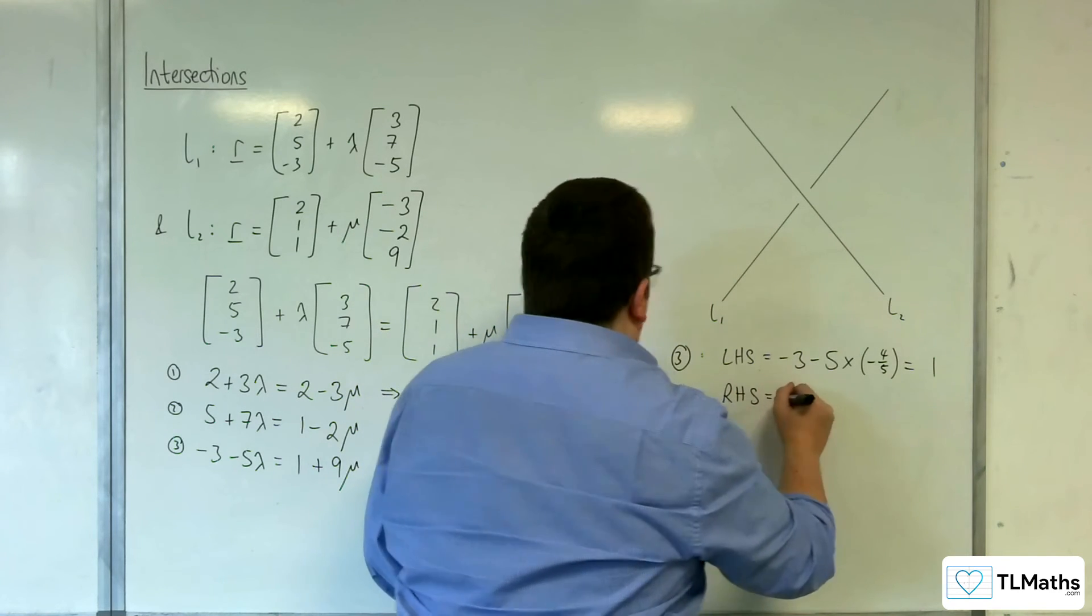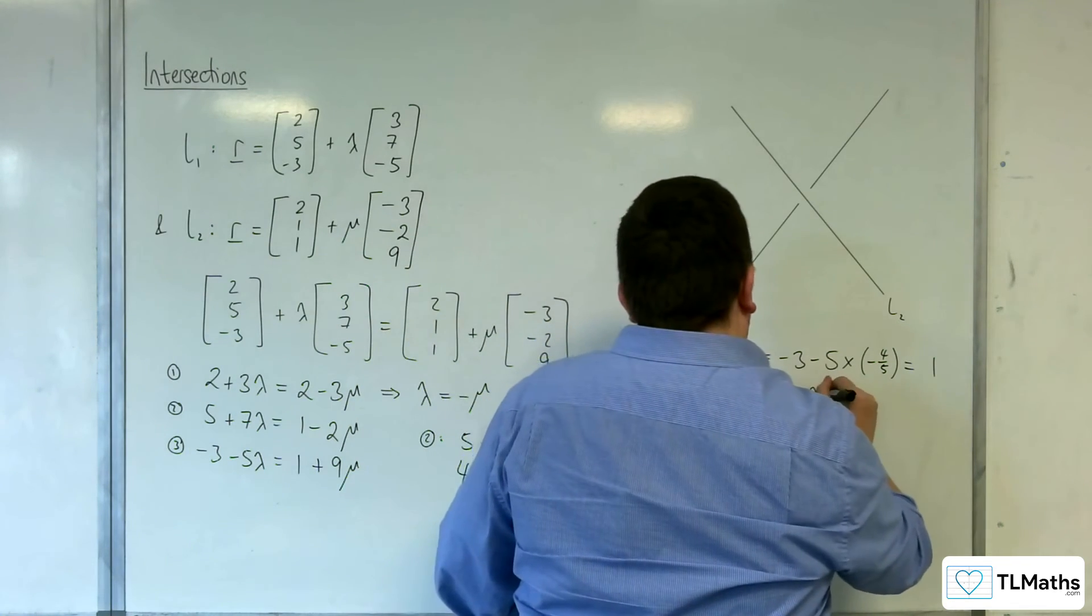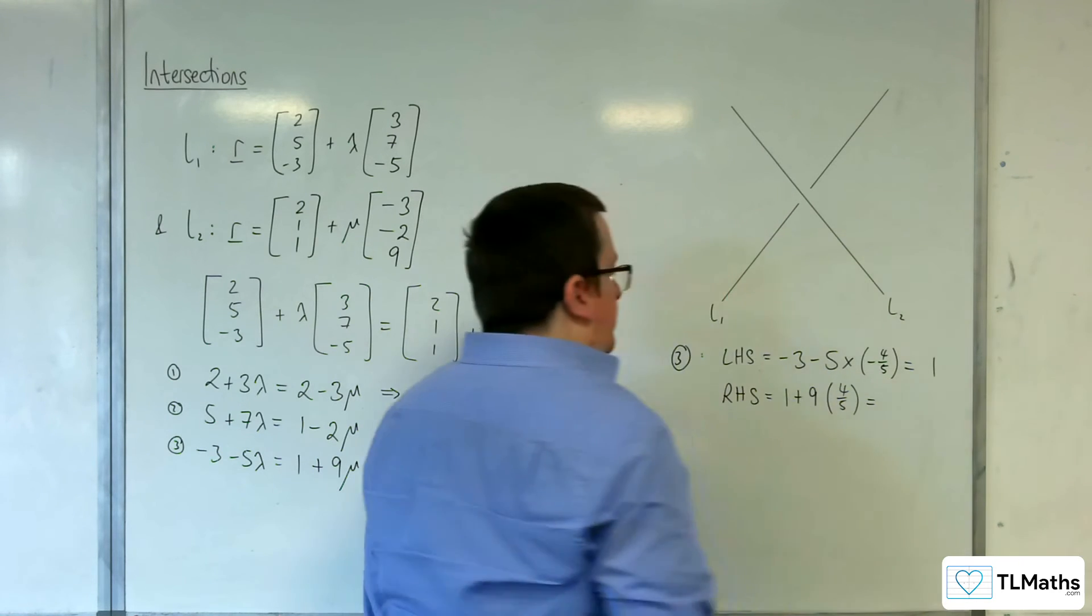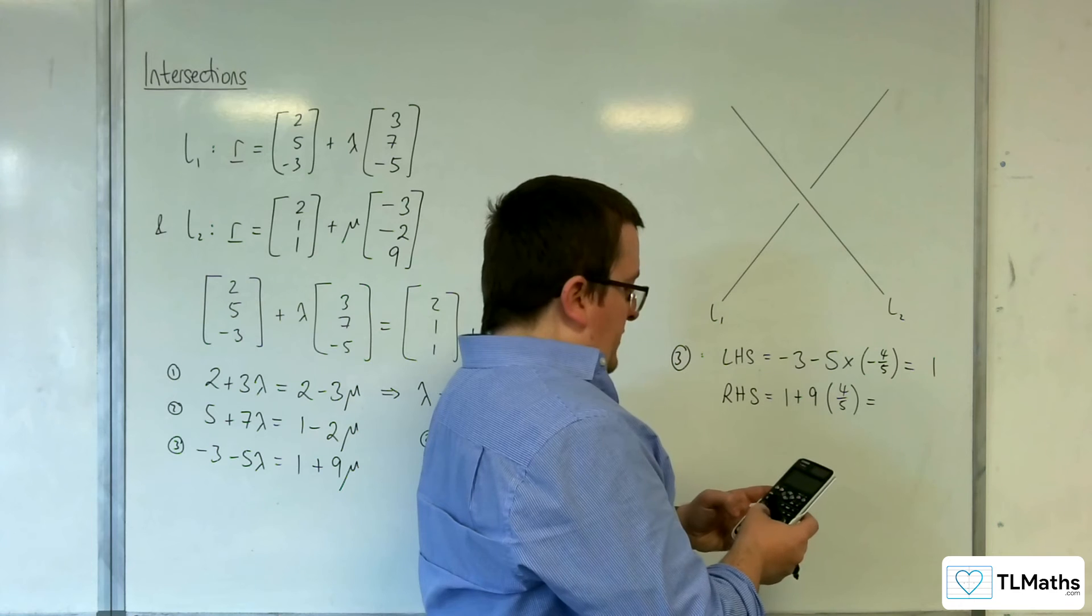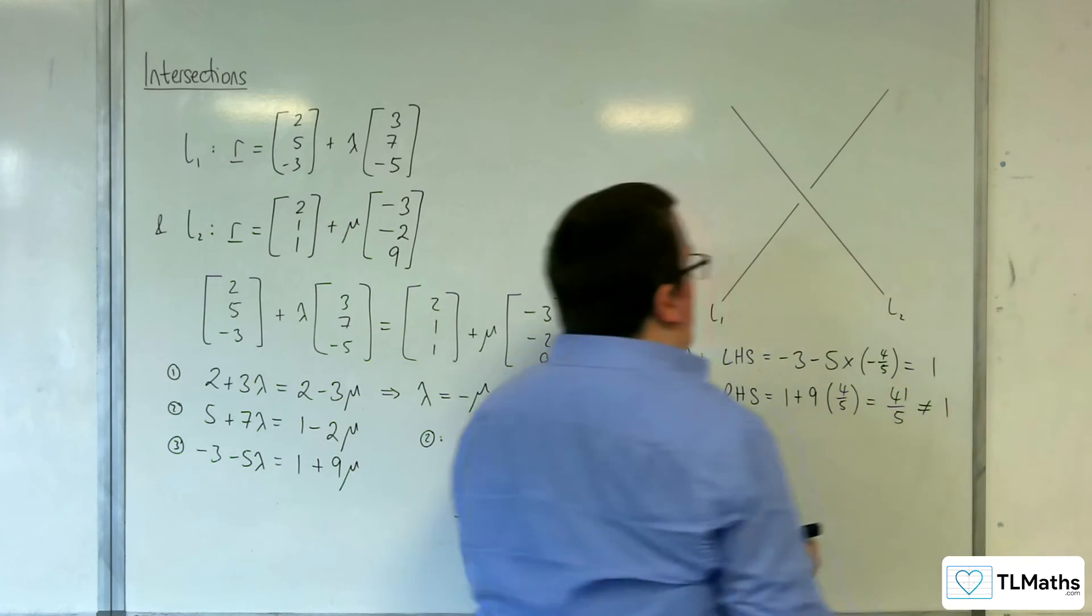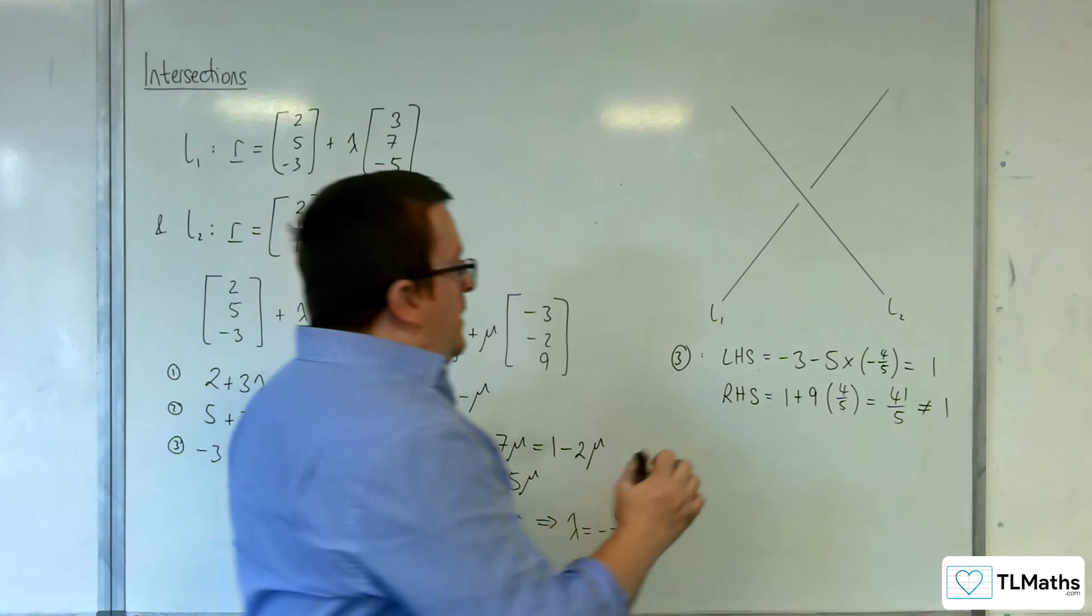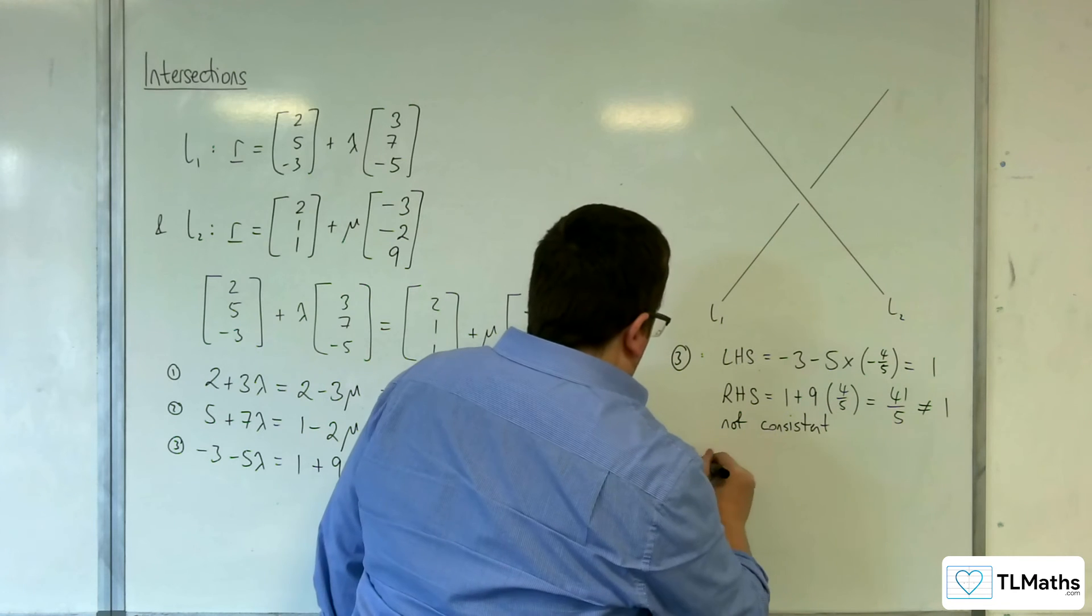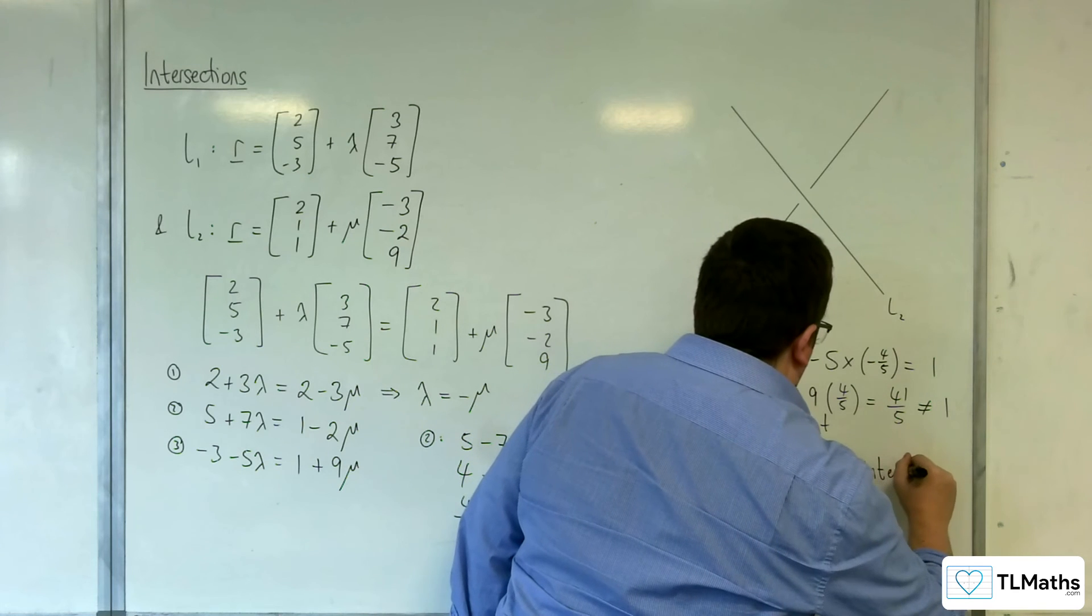Now the right-hand side is 1 plus 9 mu. So 1 plus 9 lots of 4 fifths. We can already see this isn't going to be equal to 1. So 1 plus 9 times 4 fifths is 41 fifths. That's not equal to 1. So because the left-hand side is not equal to the right-hand side, this is not consistent.